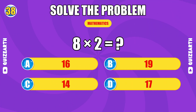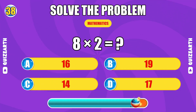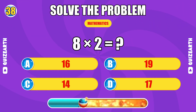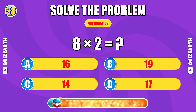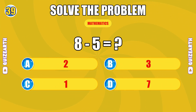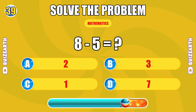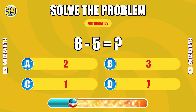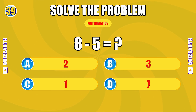How much is eight times two? Breathtaking — the answer is 16. What do you get when you subtract five from eight? Genius reflexes — the answer is three.